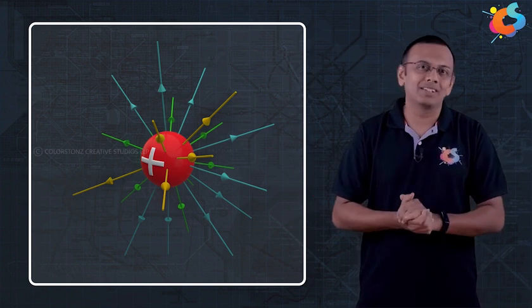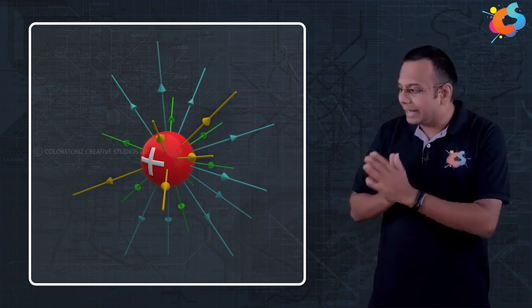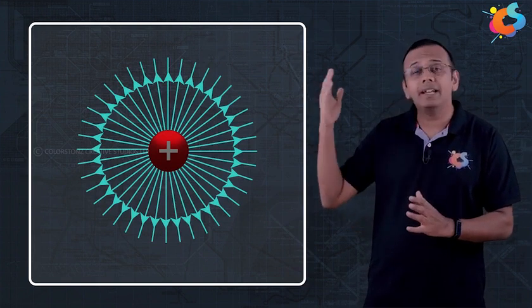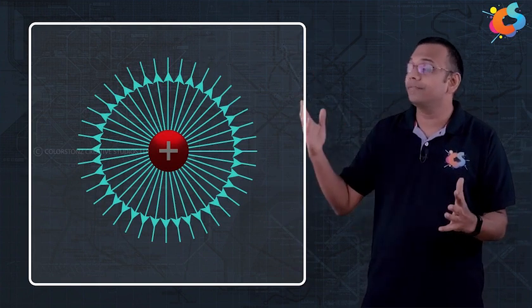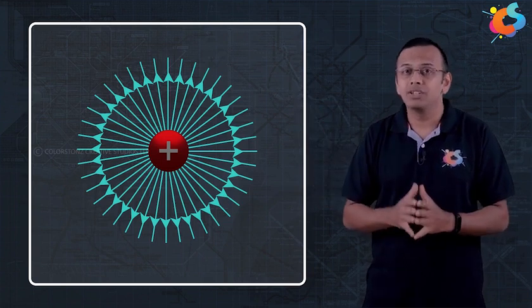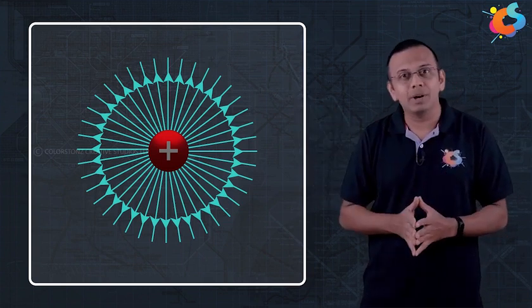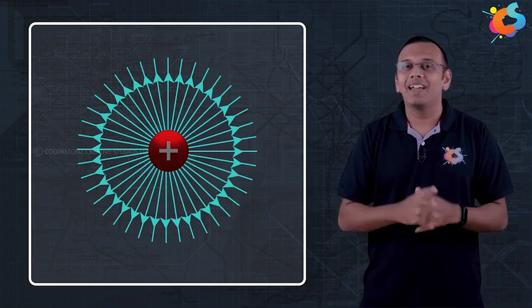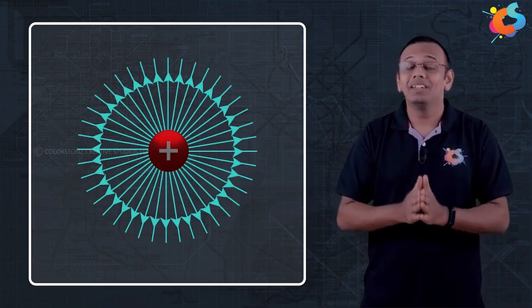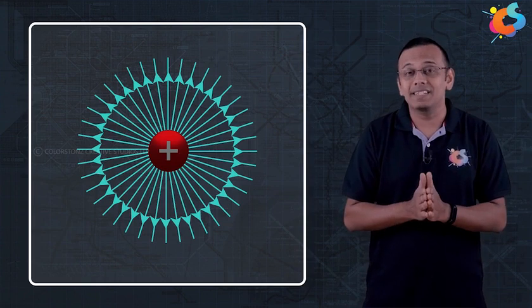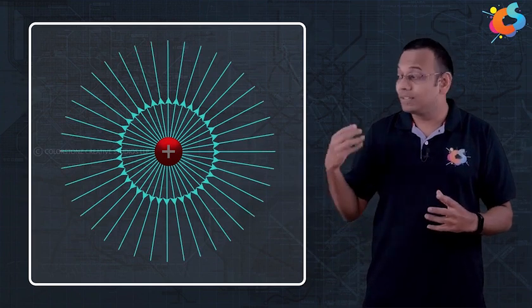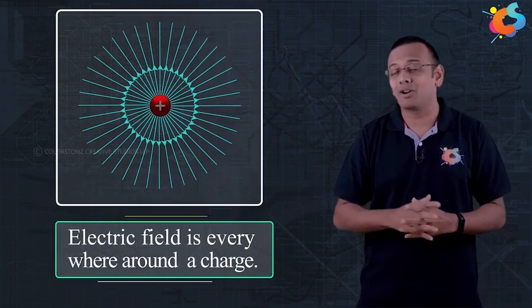You may get a doubt here: the electric field due to a point charge will be present at each and every point around it, but we are not showing an electric field line at each and every point — we are showing field lines only in certain regions. So is there no field at other points? The answer is yes, of course the field is there at each and every point, and this doubt is very valid. Theoretically, there can be infinitely many field lines around this charge because the field is actually at every point around it.